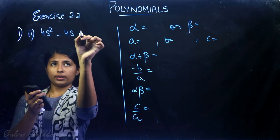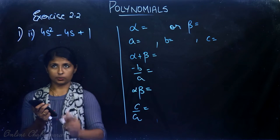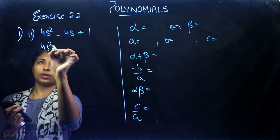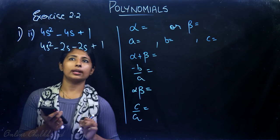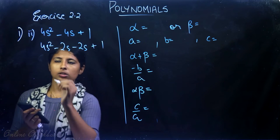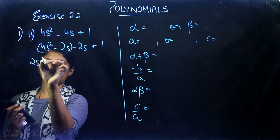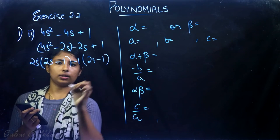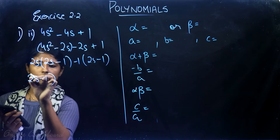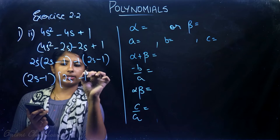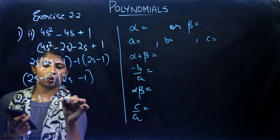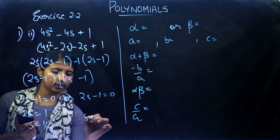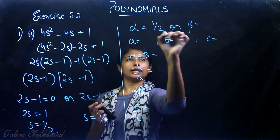Next: 4s² - 4s + 1. We split the middle term: product = 4×1 = 4, sum = -4. We write 4s² - 2s - 2s + 1. Taking 2s common from first two terms gives 2s(2s - 1), and taking -1 common from last two gives -1(2s - 1). So (2s - 1)(2s - 1) = 0. Both factors give s = 1/2, so α = β = 1/2.